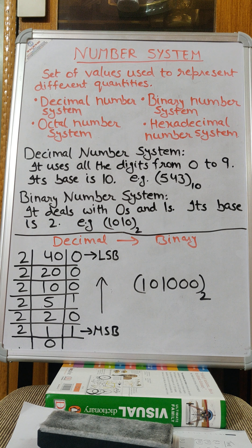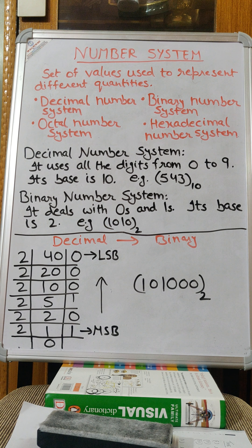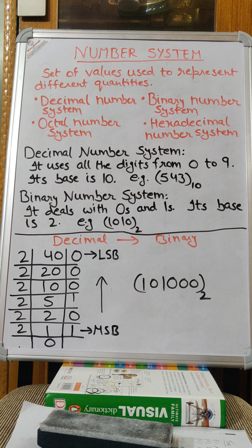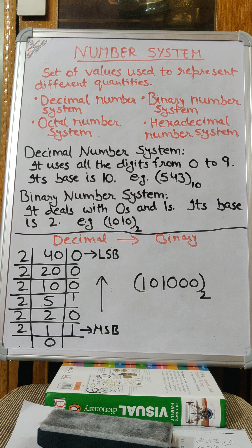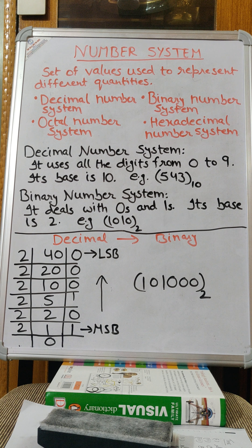We also use binary number system. Computer deals with binary number system. You might have heard bytes, kilobytes, gigabytes — what are these? A byte is a group of bits, and a bit is 0 and 1. So computer understands only 0 and 1. Computer deals with binary number system, where 0 means off state and 1 means on state.